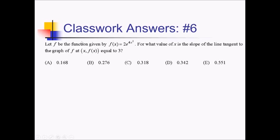For this problem, f of x is 2e to the 4x squared, and we want to know what x value gives us a tangent line slope of 3. We need the derivative and set it equal to 3. Using the chain rule, f prime is 2e to the 4x squared — the outer derivative — then multiply by the derivative of 4x squared, which is 8x. So f prime equals 16x e to the 4x squared, and all of this needs to equal 3.